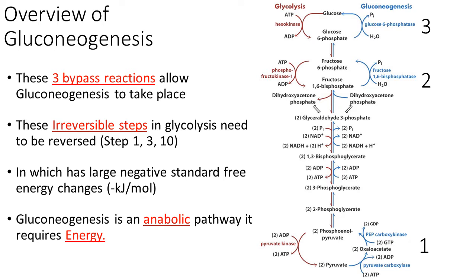The numbers 1, 2, and 3 at the side of the screen represent the 3 bypass reactions in the whole cascade of gluconeogenesis. All 3 bypass reactions must occur to allow gluconeogenesis to take place. These 3 steps are irreversible in glycolysis, and have large negative standard free energy changes in terms of kilojoules per mole, thus requiring high energy to overcome these glycolysis reactions.